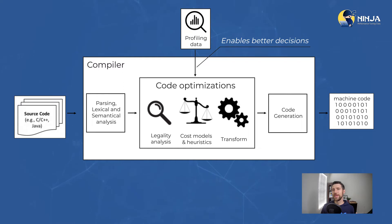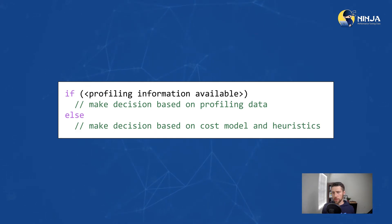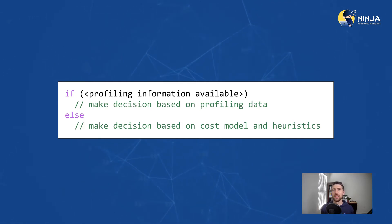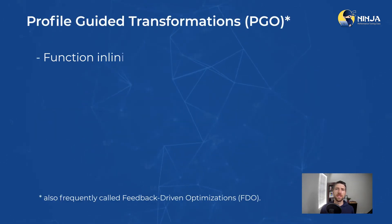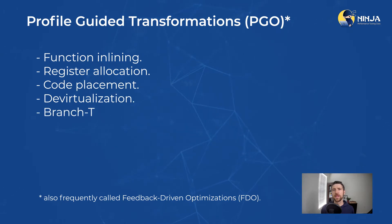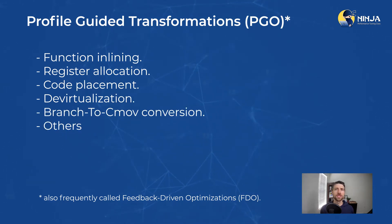There is a specific format of data that compilers recognize and a set of specific options that allow you to feed that profiling data into the compilation. If you actually take a look at the LLVM sources, oftentimes you will see a pattern where if the profiling data is available, you make transformations based on that profiling data; otherwise, you fall back to using generic cost models and heuristics. Here is a list of transformations that could be enhanced with PGO: function inlining, register allocation, and a few others.